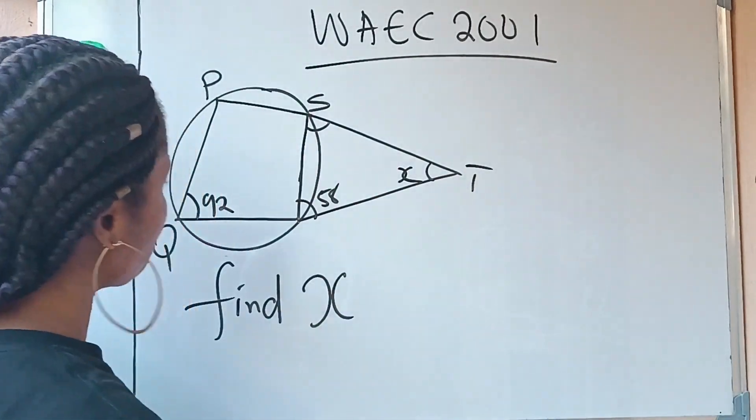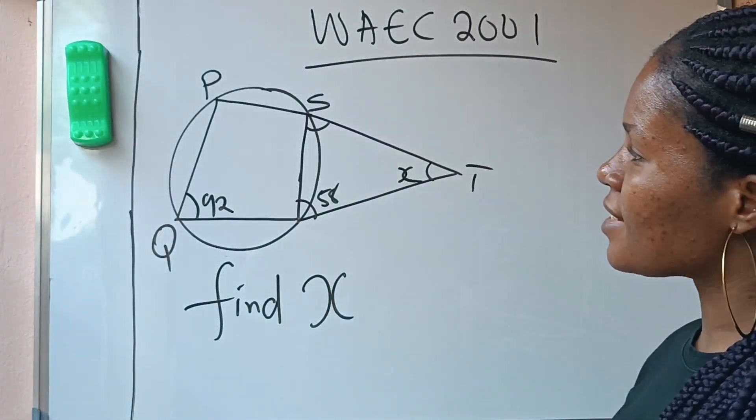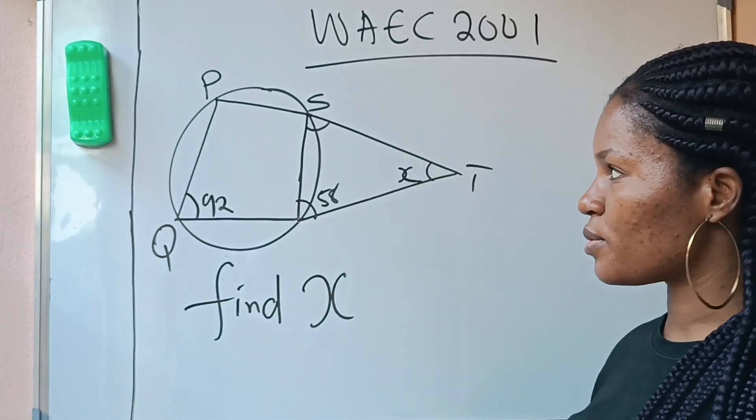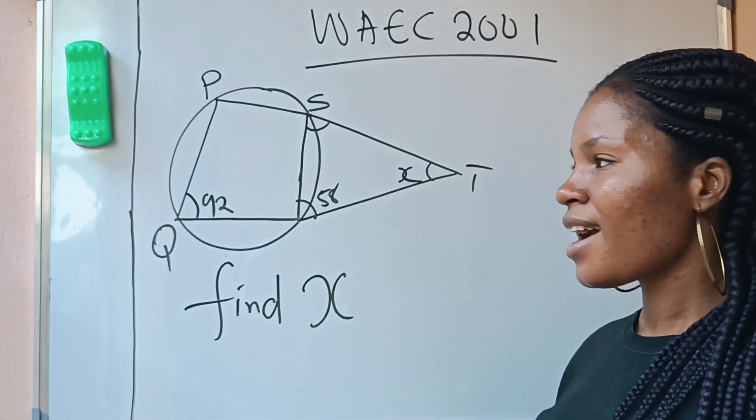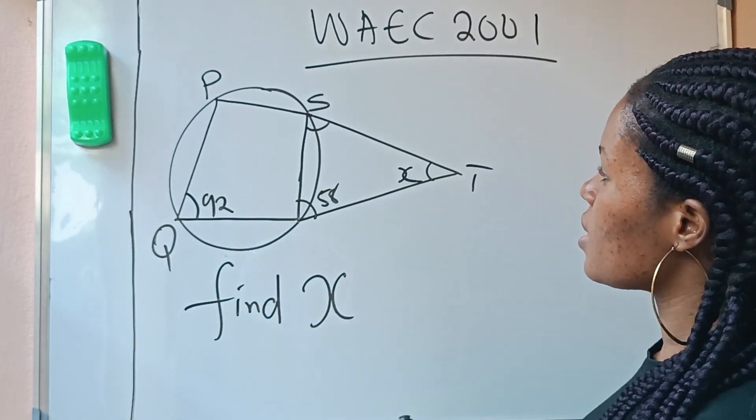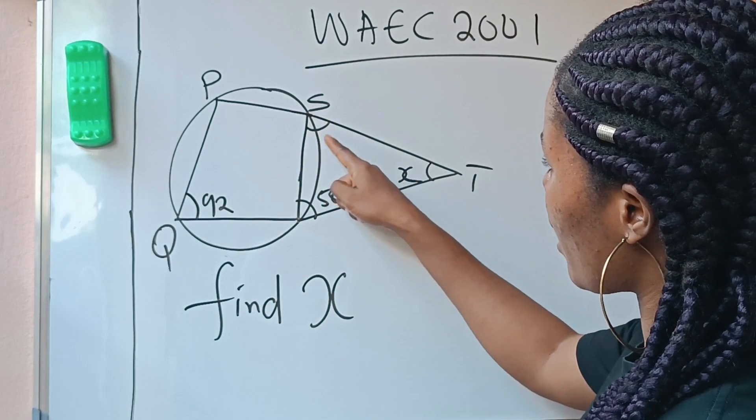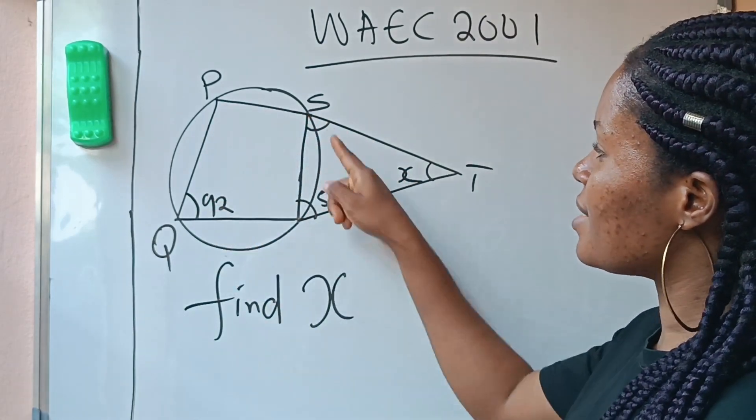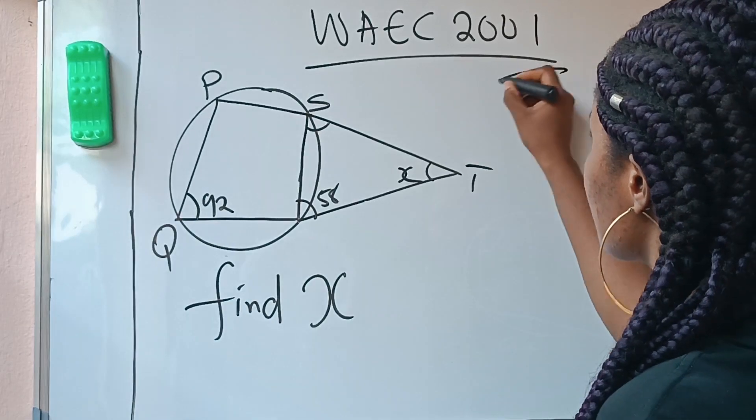Looking at what we have on the board now, look closely and see if you can recognize one of those theorems that I just taught you. Yes. Notice that this is the exterior angle of this cyclic quad. That is this particular angle here. It's the exterior of this cyclic quad. So it means that this particular angle here, let's call it S.